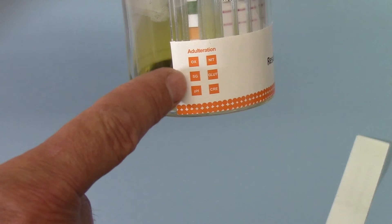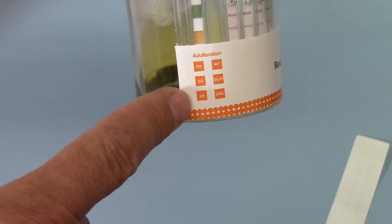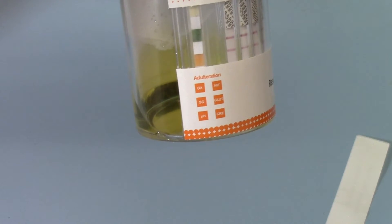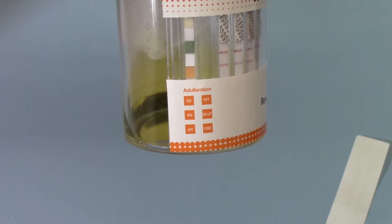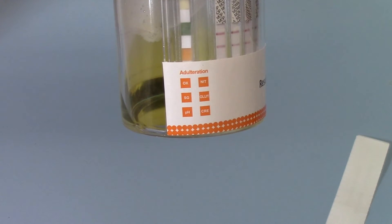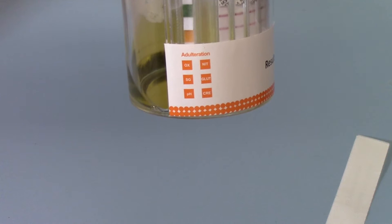OX for oxidants, SG for specific gravity, and PH for pH. And on the adulteration card, you will have interpretation color pads showing you if these are within the normal range.